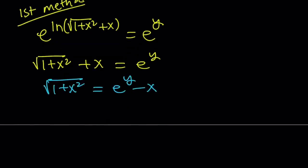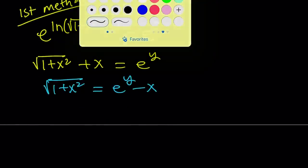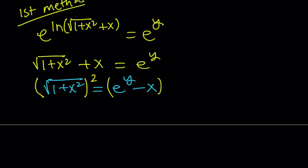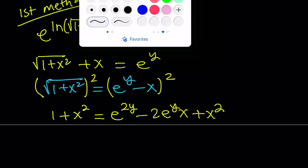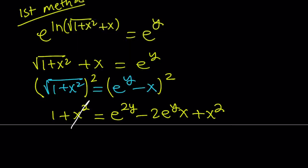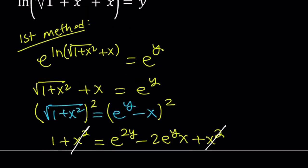Now let's go ahead and square both sides. I'm going to square this and that. Square root of 1 plus x squared, squared, is going to be 1 plus x squared. And this is like a minus b quantity squared, so it's going to be e to the power 2y minus 2 e to the power y times x plus x squared. The good thing about this equation is that x squared cancels out, leaving us with a first degree power of x, which is good because we're trying to solve for x.